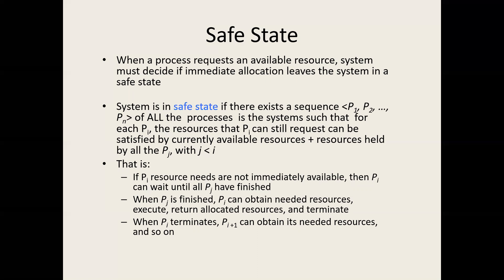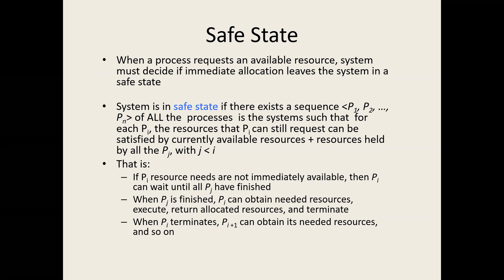To determine whether there is a safe state, we use a simple system model: we check how much resources are required, how much is already allocated, and whether the need can be satisfied from available resources. If the need is satisfied, that process can complete. When a process completes, all held resources are released and added to available resources. Then we check for more processes that can complete. If we find a sequence this way, it is a safe state.